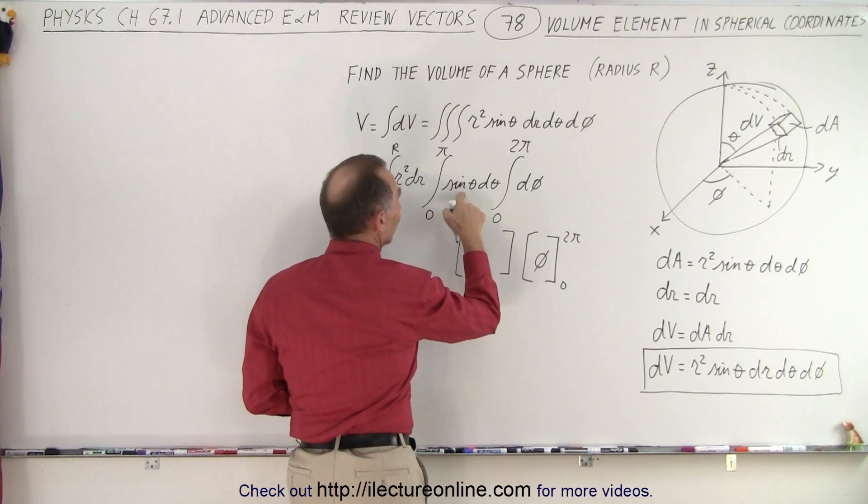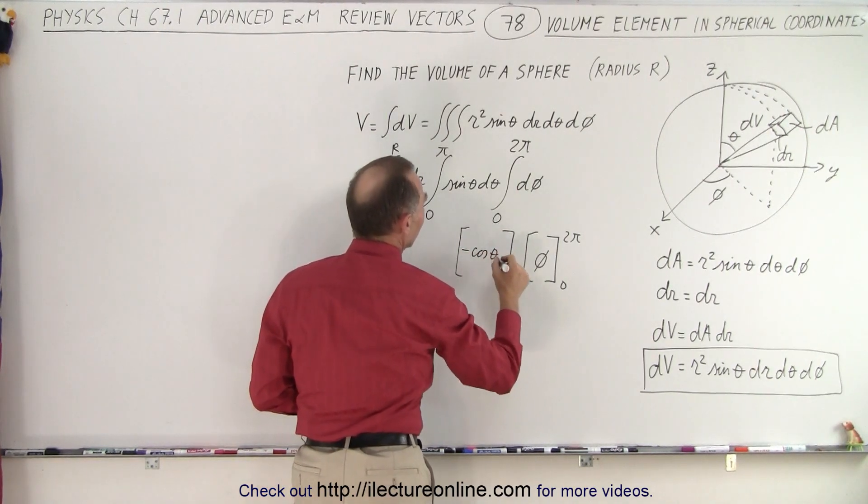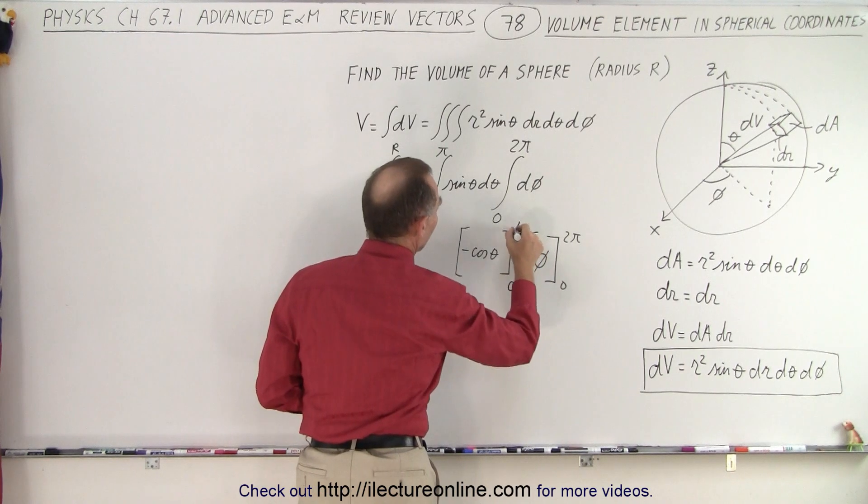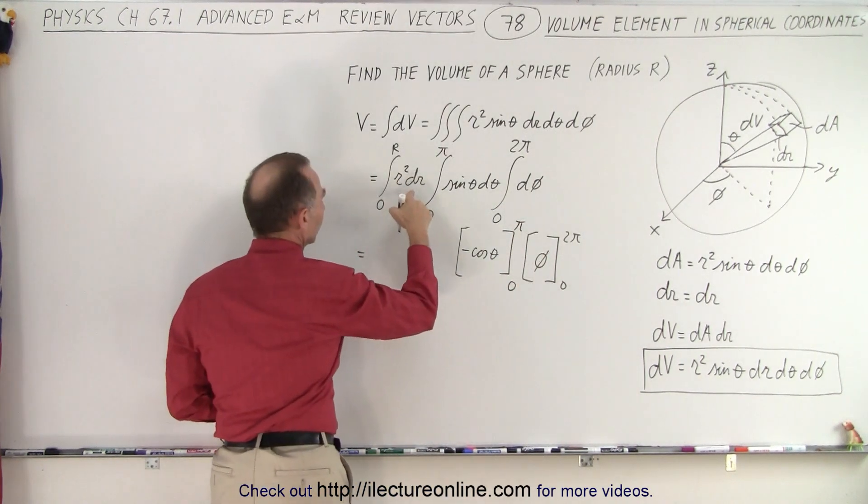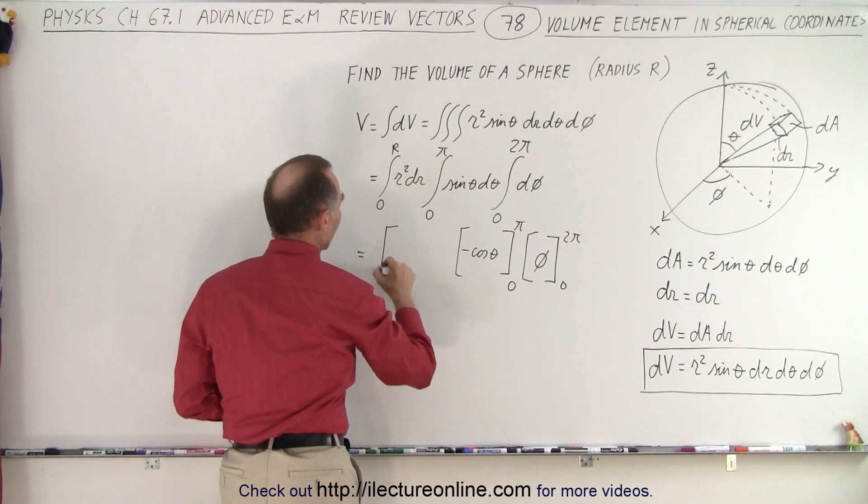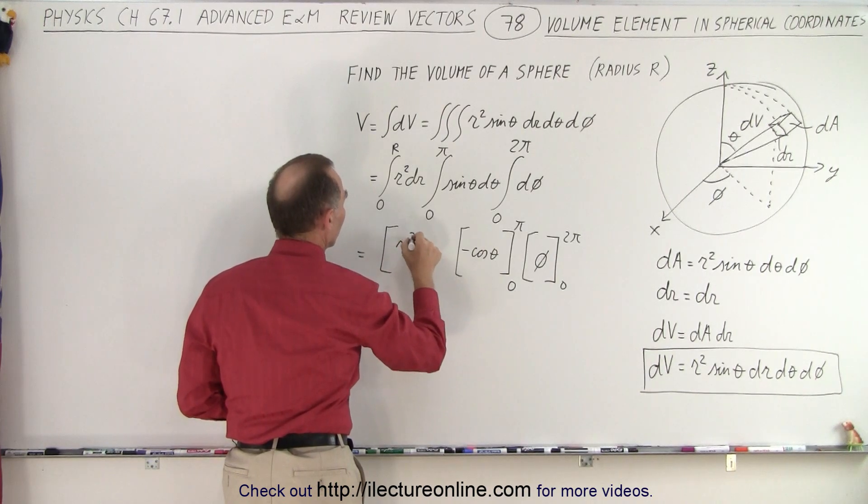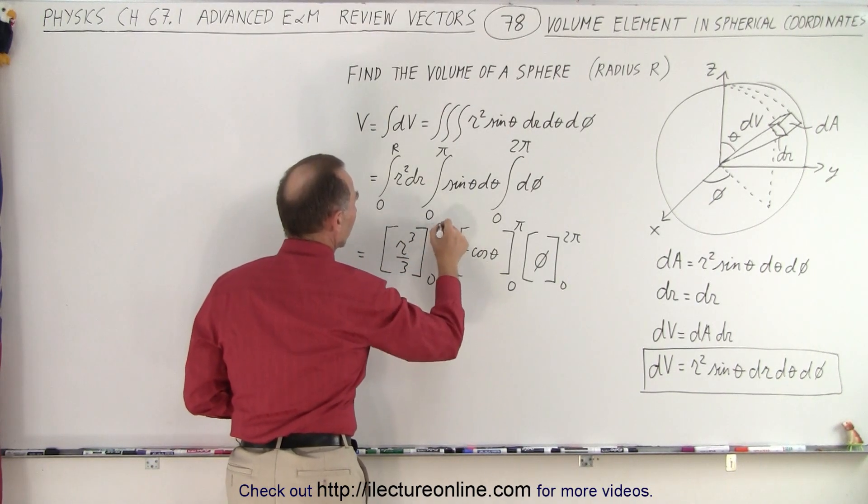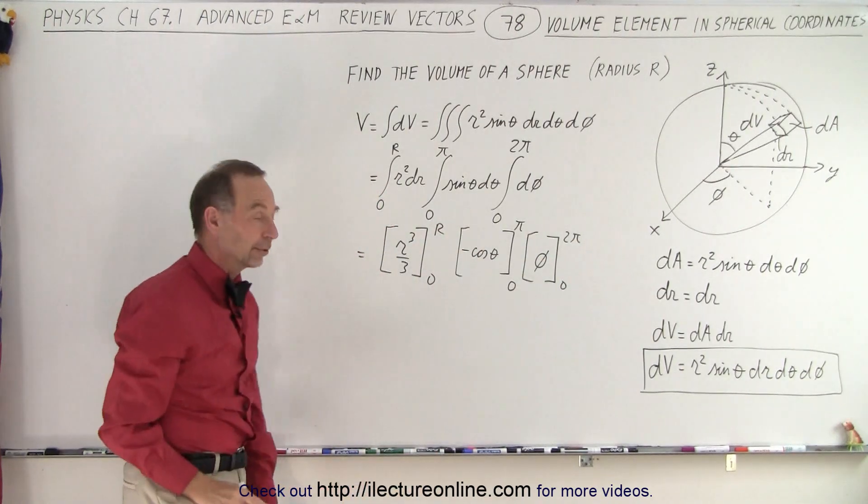So the integral of the sine of theta is the negative cosine of theta. And we evaluate that from zero to pi. And then we have r squared dr. That becomes r cubed over three from zero to R. So we have to evaluate those three integrals.